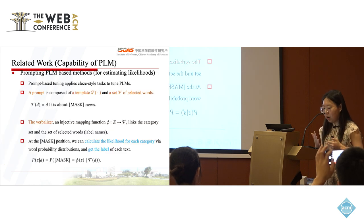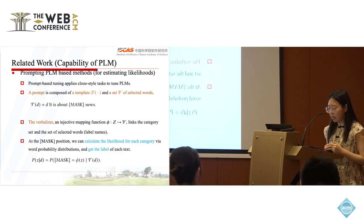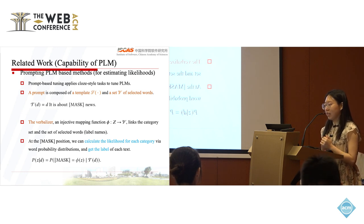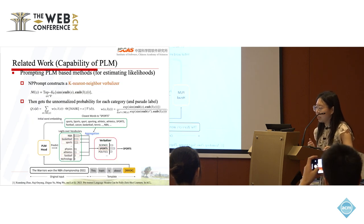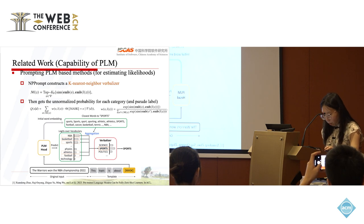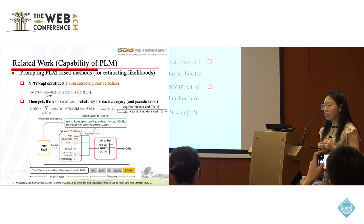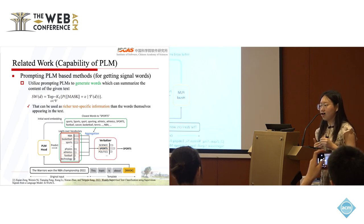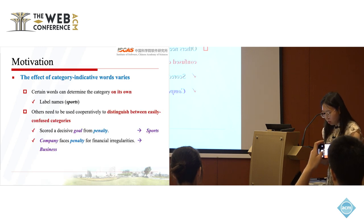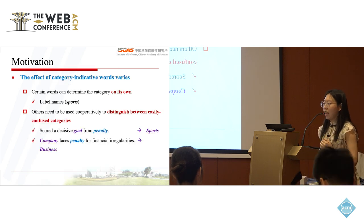Recently, prompting PLMs has greatly boosted the WSTC task. This method mainly leverages two capabilities of the PLM. For one thing, they estimate the likelihood for each category via the word probability distribution, the logits over vocabulary, and get the label of each text via the verbalizer, which links the category set and the set of selected category indicative seed words. For another, they use the prompting PLM to generate words which can summarize the content of the given text.